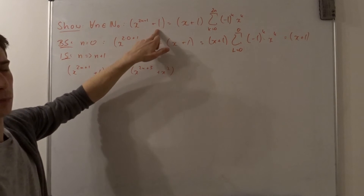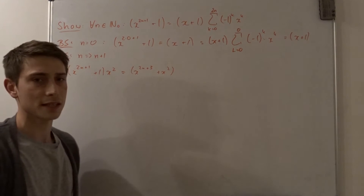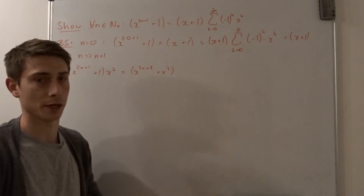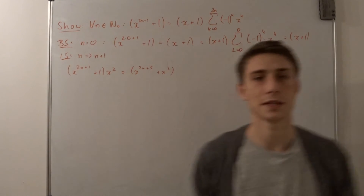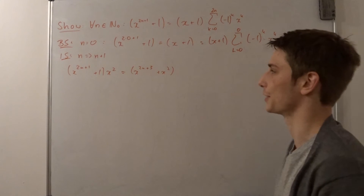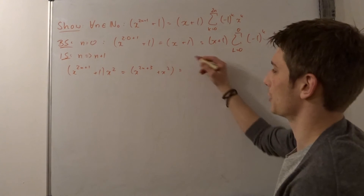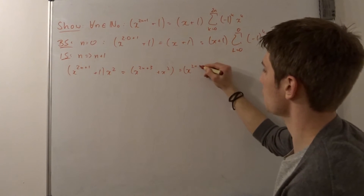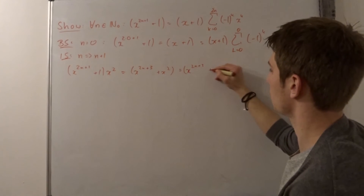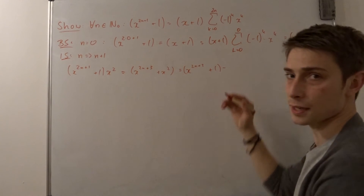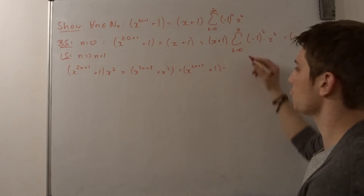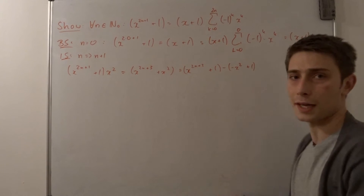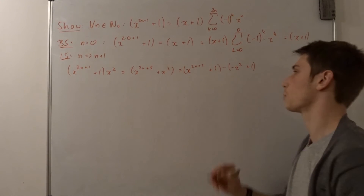So x to the 2n plus 1 power plus 1 times x squared — distributing gives us x to the 2n plus 3 plus x squared. Now we need a plus 1 here. We could add a 1 and then subtract a 1, since adding 0 changes nothing. So this is the same as x to the 2n plus 3 power plus 1, minus x squared plus 1, written in that way — and you will see later why.